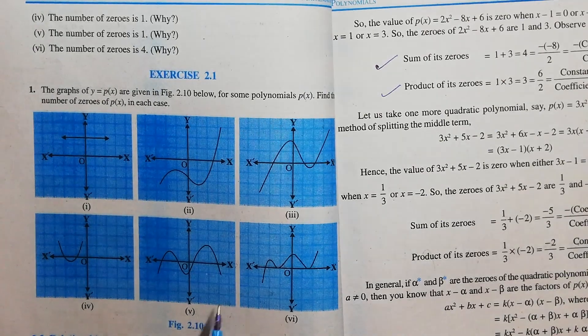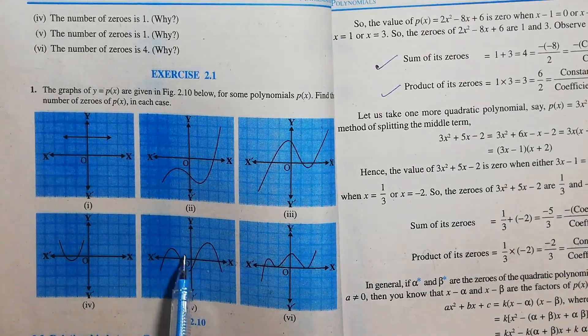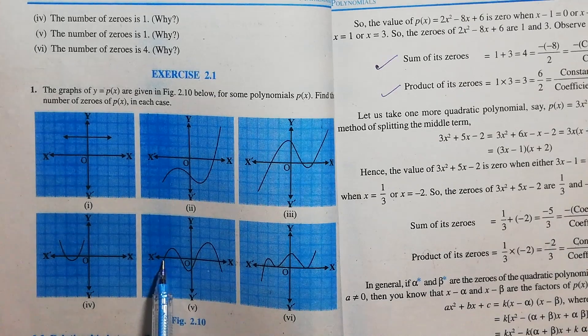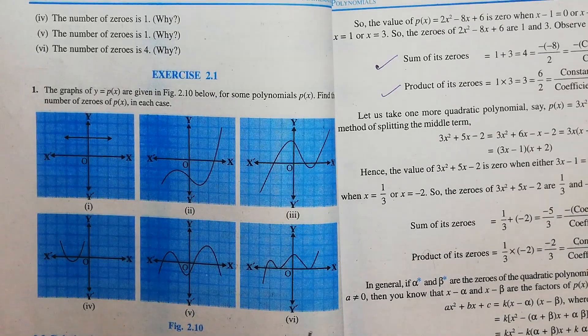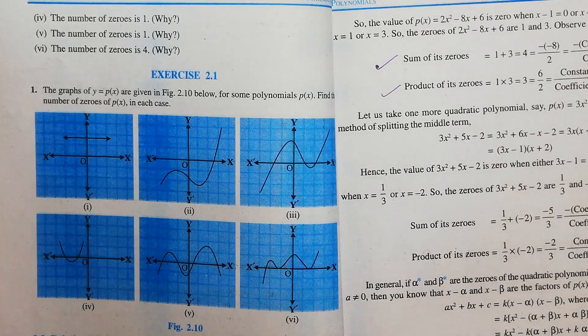Question number 5. Here, the graph intersects the x-axis at 1, 2, 3, 4 points. Therefore, the number of zeros of polynomial p(x) equals 4.